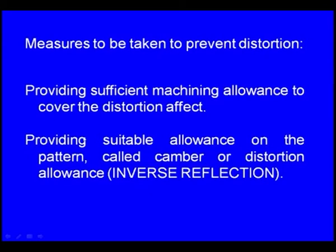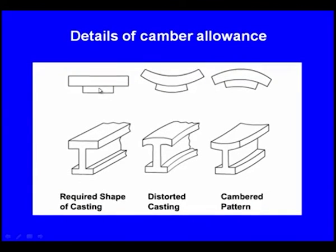Measures to be taken include providing sufficient machining allowance to cover the distortion effect, and providing a suitable allowance on the pattern called camber or distortion allowance or inverse reflection. We design the pattern in the opposite direction of the expected distortion — the shape of the pattern is not similar to the final cast part, but after solidification due to distortion, the shape of the casting becomes the same as the expected casting.